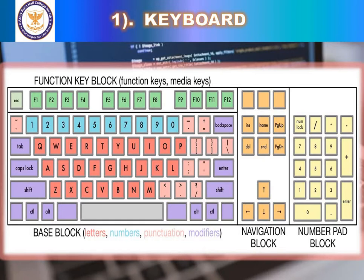There is also a Home key. It is used in word processing and MS Word to move the cursor to the top-left of the screen or to the beginning of the document. Unlike Page Up, which takes you to the top of the same page, the Home key takes you all the way to page one of the entire document — so if you are on page 29 of a 50-page document and press Home, it takes you to page one.